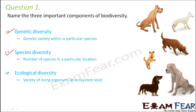The third level is ecological diversity, which happens at an ecosystem level. That means we are not talking about the same location — it is about different ecosystems. Some areas will have more variety of ecosystems, and some areas will have lesser variety of ecosystems. So at an ecosystem level, we talk of ecological diversity. These are the three components of biodiversity.